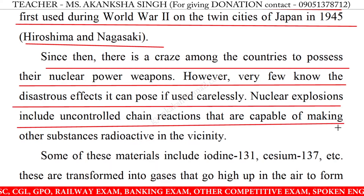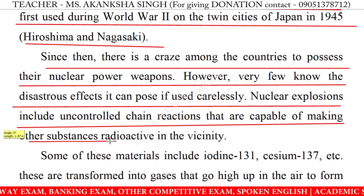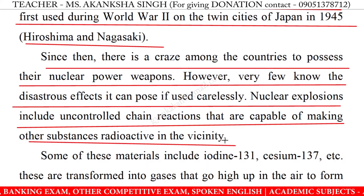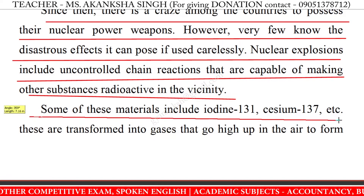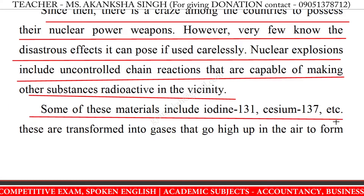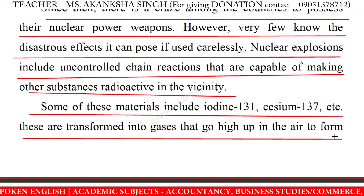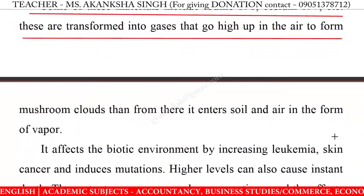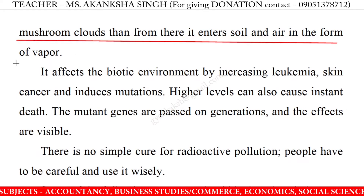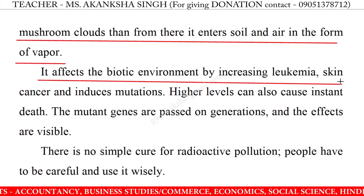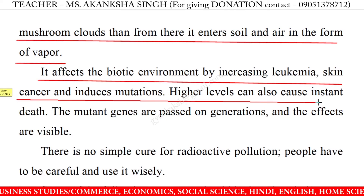Nuclear explosions include uncontrolled chain reactions that are capable of making other substances radioactive in the vicinity. Some of these materials include iodine-131, cesium-137, etc. These are transformed into gases that go high up in the air to form mushroom clouds, and from there they enter soil and air in the form of vapor. It affects the biotic environment by increasing leukemia, skin cancer, and inducing mutations.